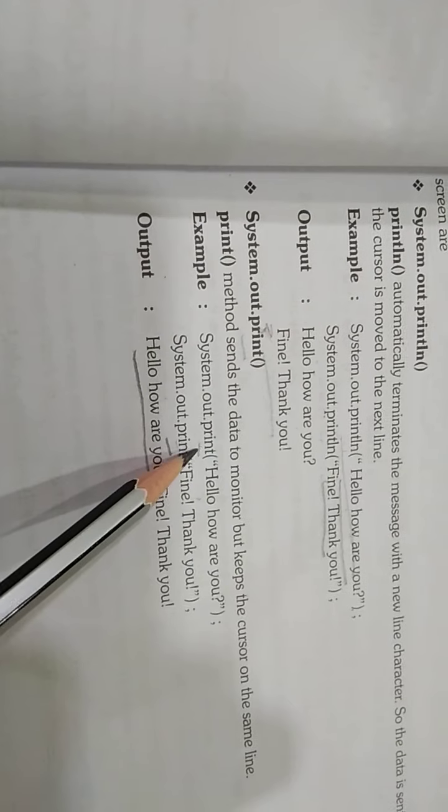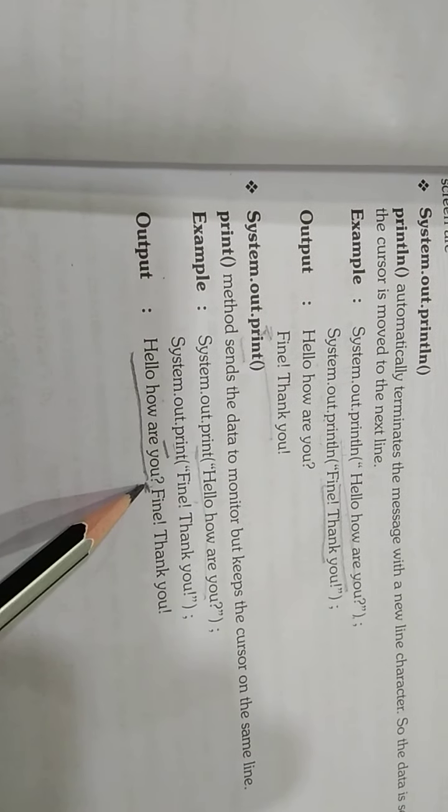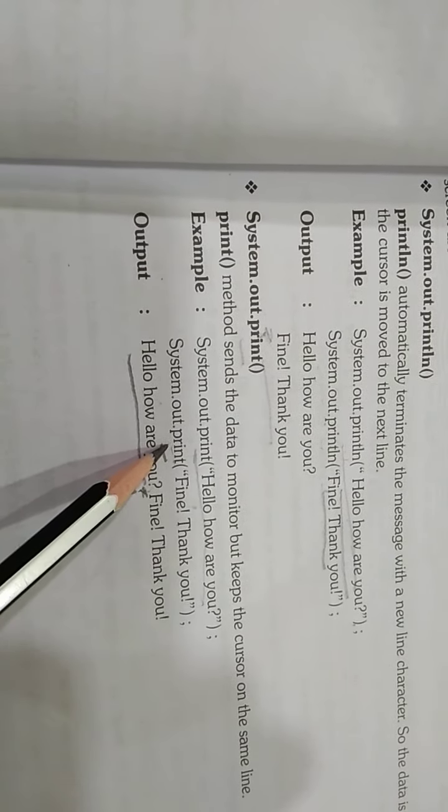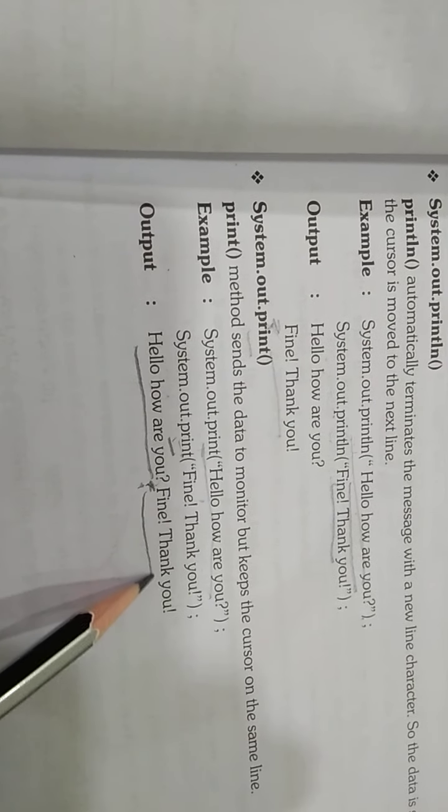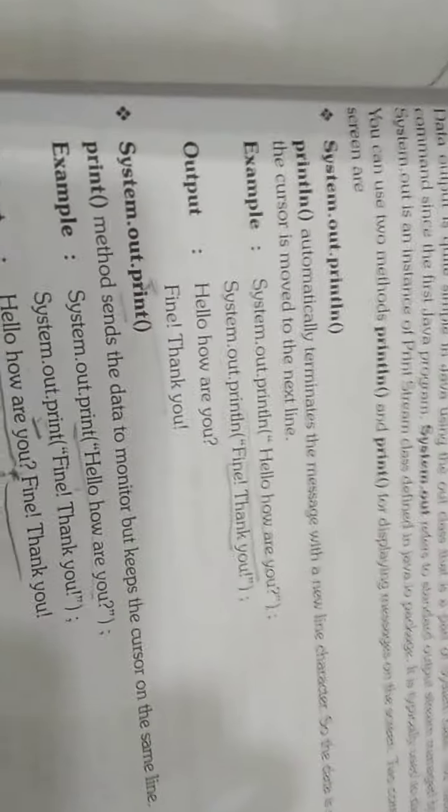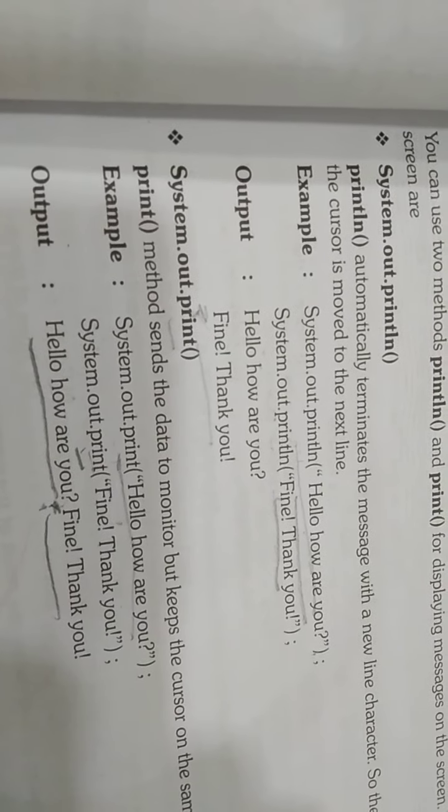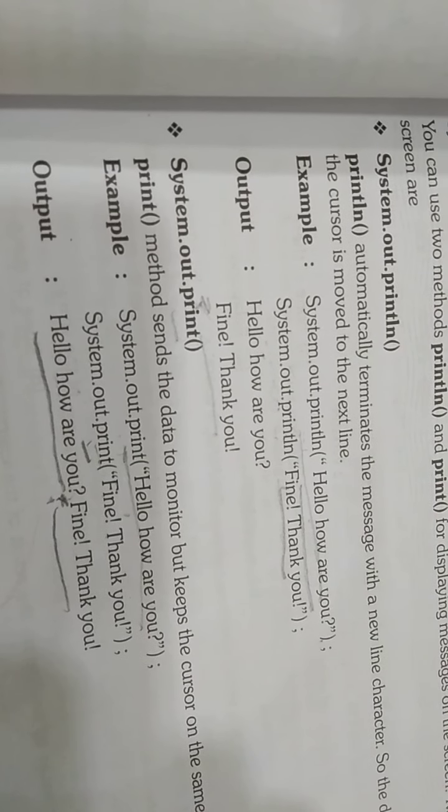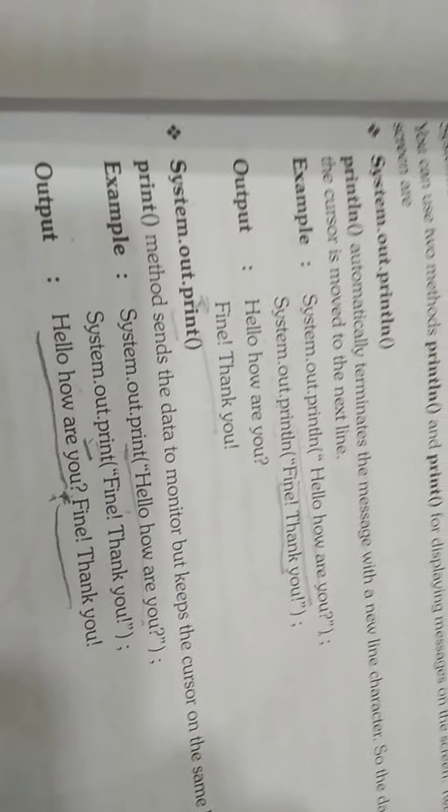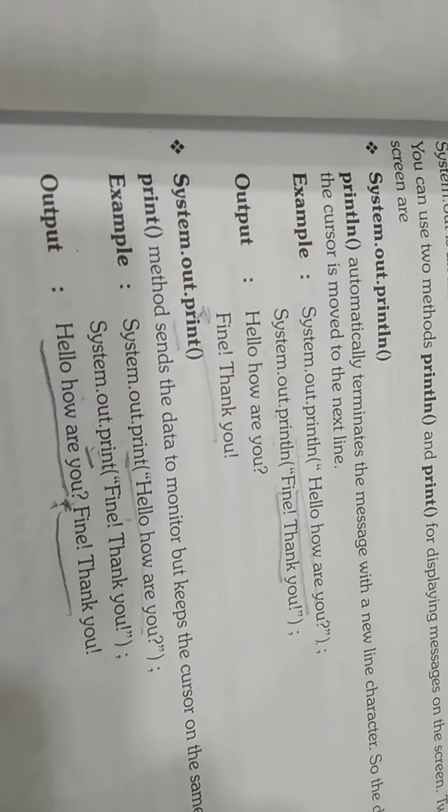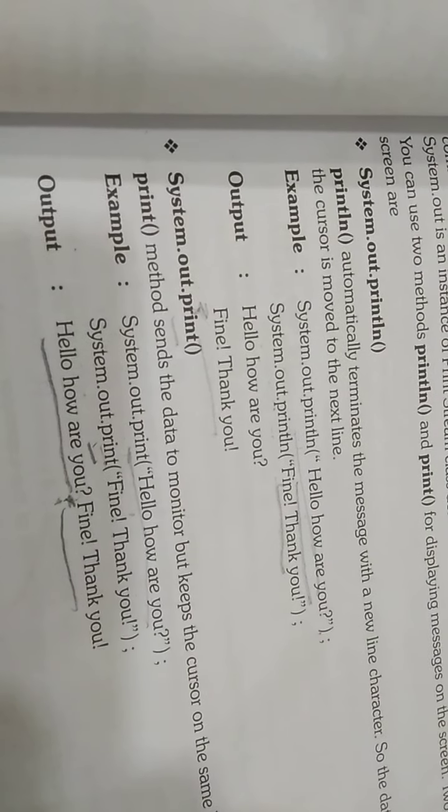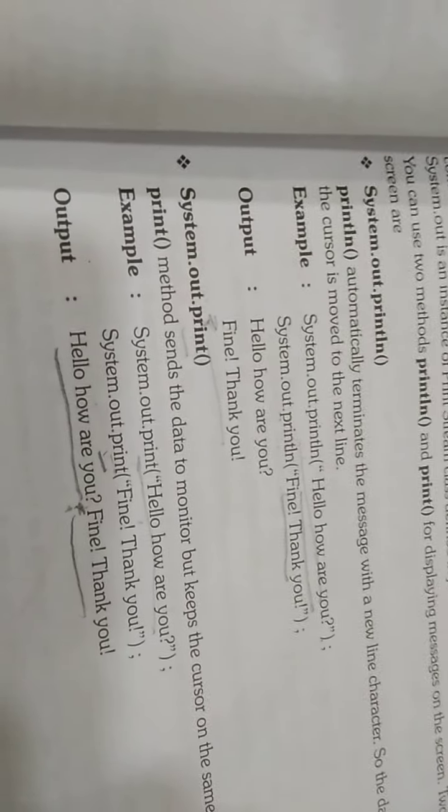After this line is over, the cursor is here only. The moment the next line comes, it will get printed from here only. So there are two methods: System.out.println and System.out.print. These two are the methods of System class which are used to display the statement on the screen.